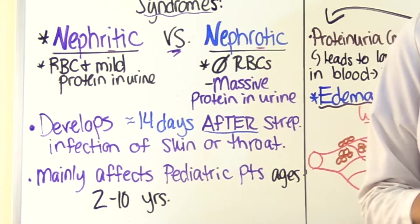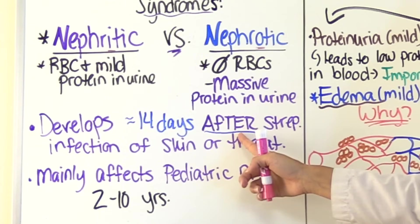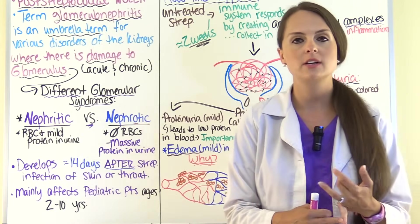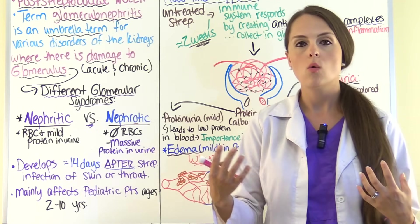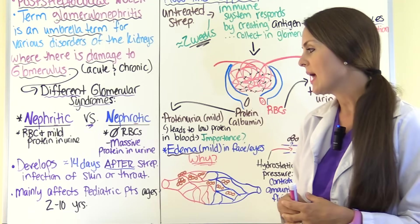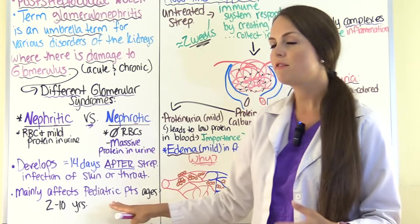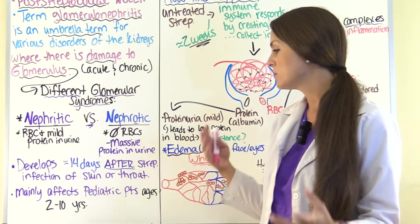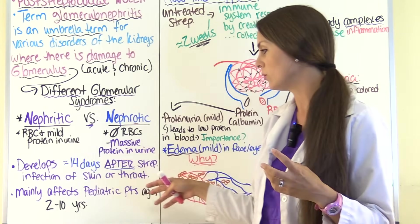This condition tends to develop about 14 days after a strep infection — either of the skin or the throat — and it tends to mainly affect pediatric patients, usually between the ages of 2 to 10 years old.